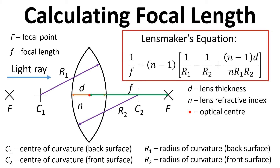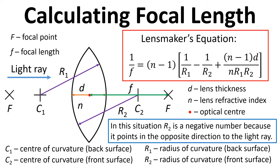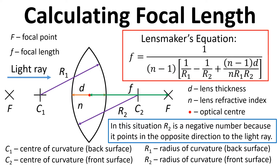We can use the lens maker's equation to calculate focal length if we know the other parameters. If we know the parameters we can put them in and calculate a value. For this situation R2 is considered to be a negative number because it points in the opposite direction to the light ray. We can do one over both sides to get f equals something — previously we had one over f equals all the terms, and now we get f equals one divided by what we originally had on the right hand side.